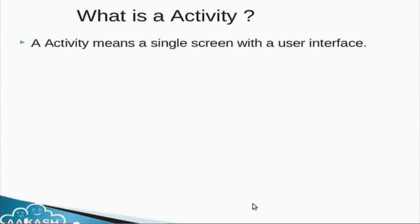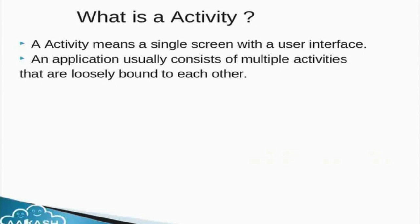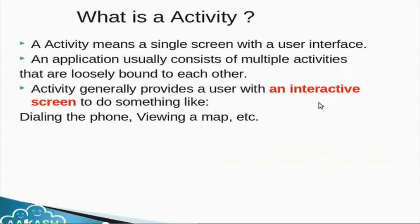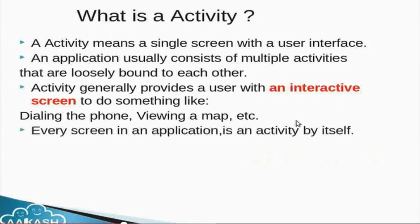Going into detail — what is an activity? An activity means a single screen with a user interface. An application usually consists of multiple activities that are loosely bound to each other. An activity generally provides a user with an interactive screen to do something like dialing the phone or viewing a map. Every screen in an Android application is an activity by itself.